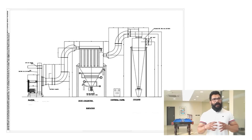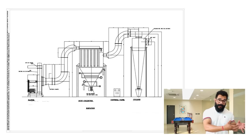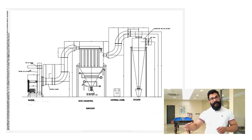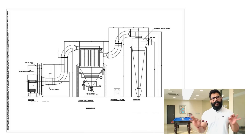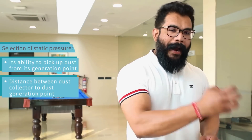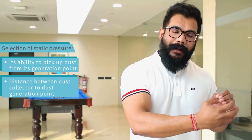Next is the static pressure available to us. I will try to share a general arrangement drawing of a dust collection system — how dust is generated, collected from its generation point, taken to the dust collector and blower, and finally released to the environment through a chimney. The static pressure must be adequate enough to handle the distance between the dust collector and the dust generation point.